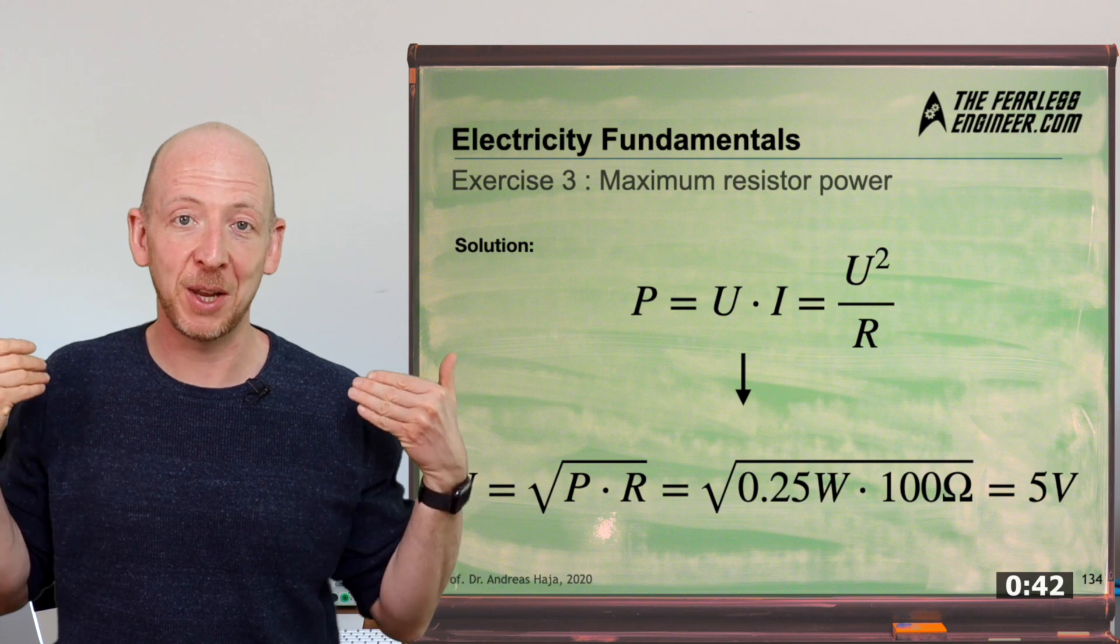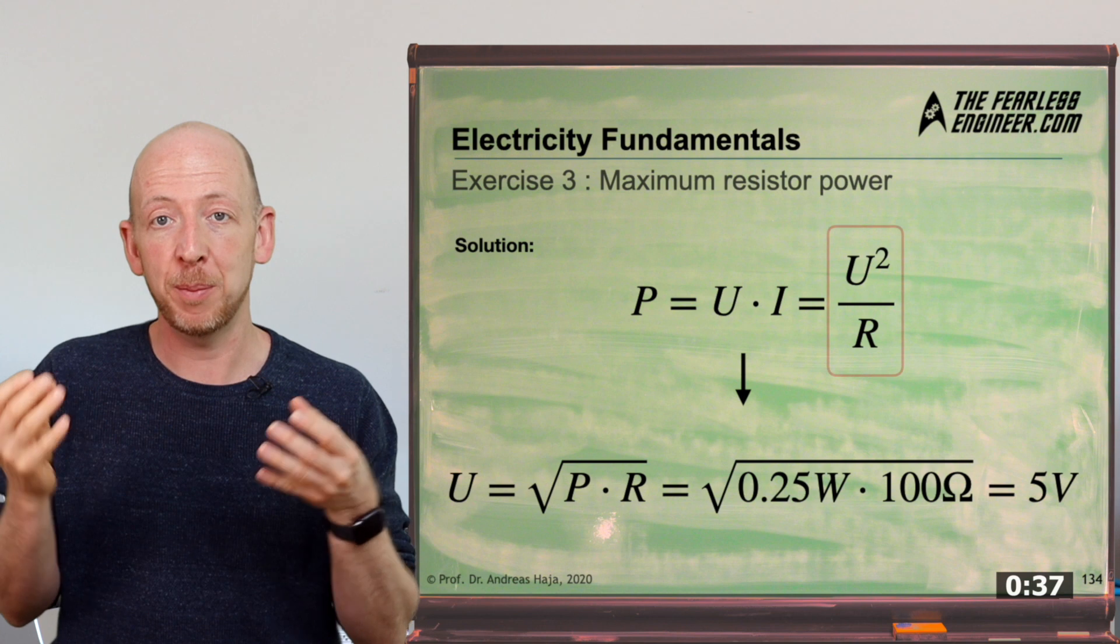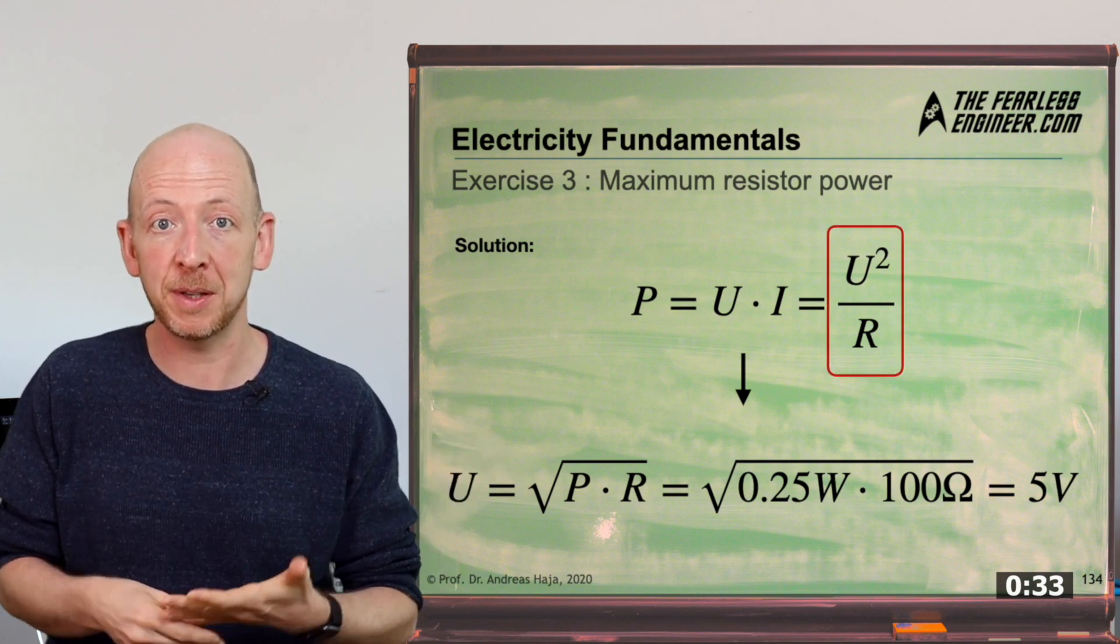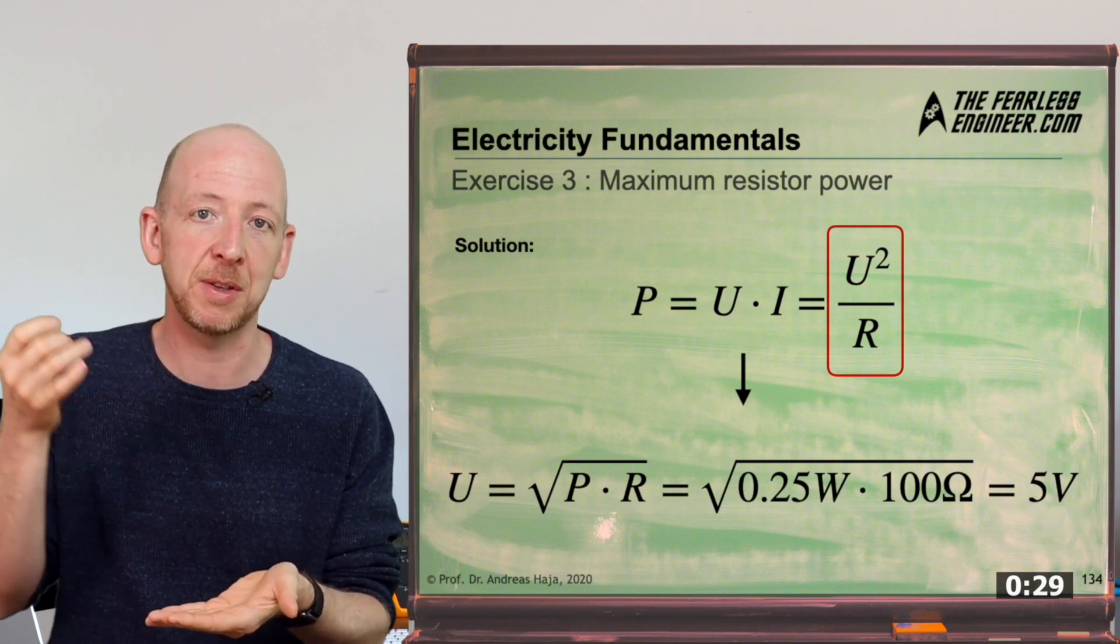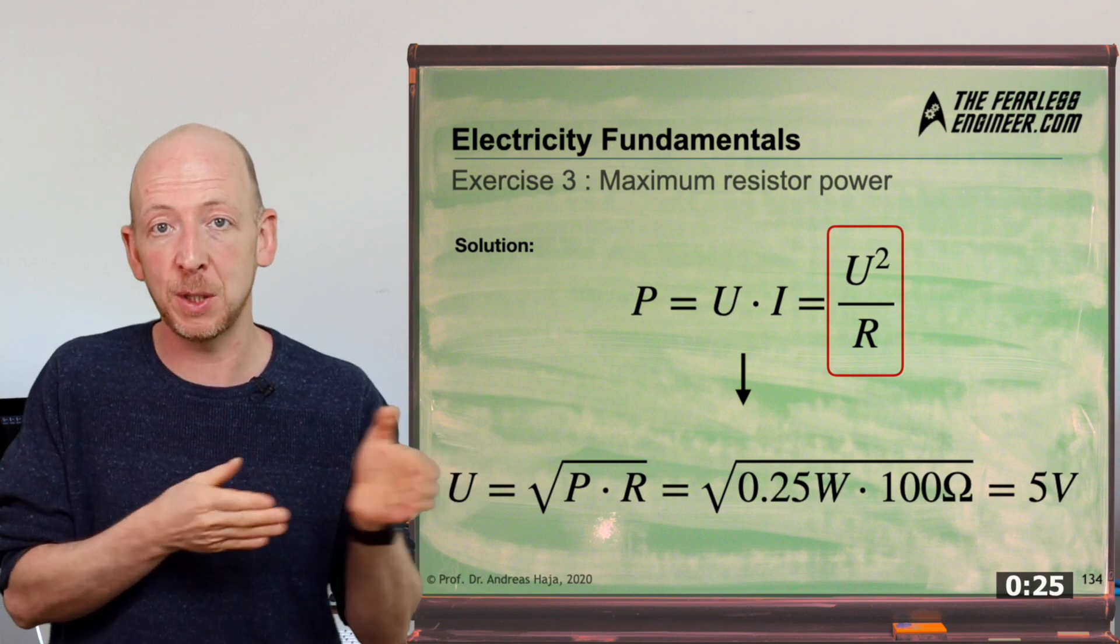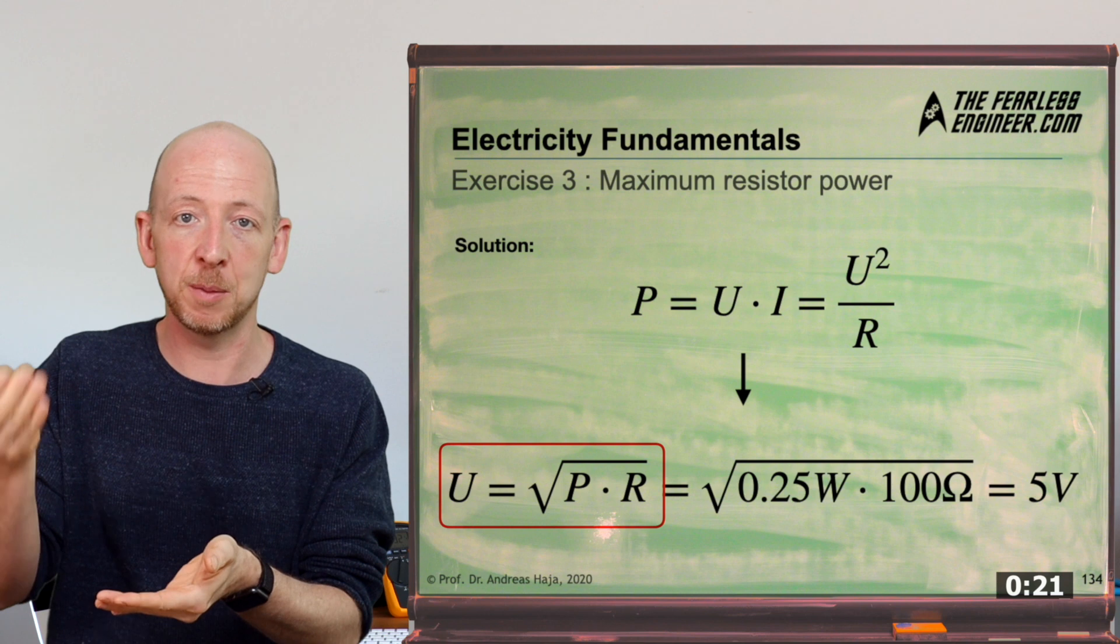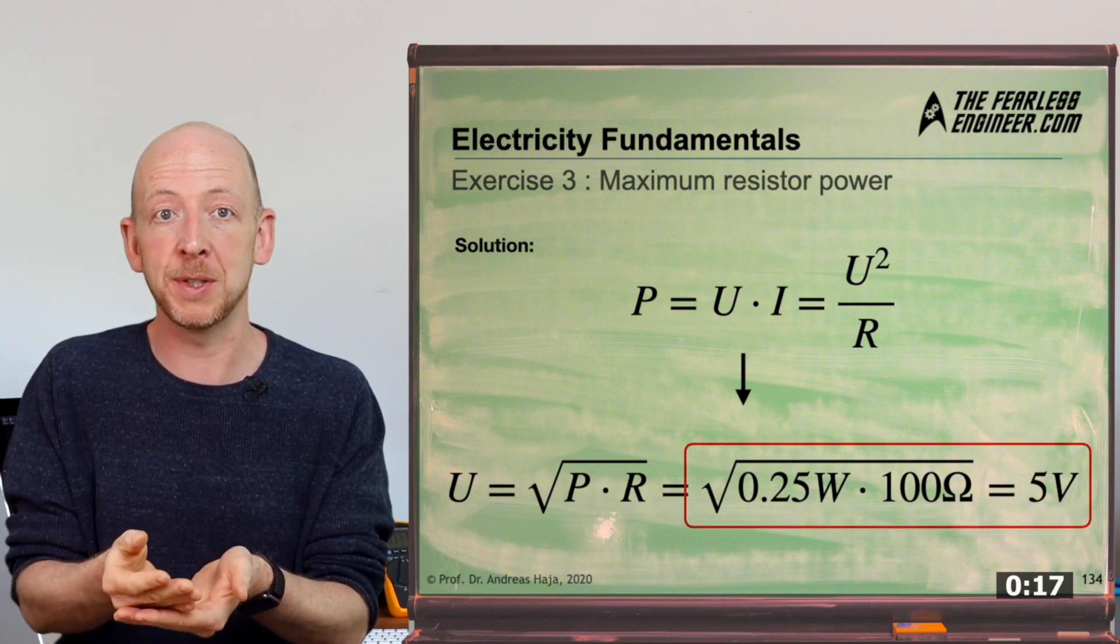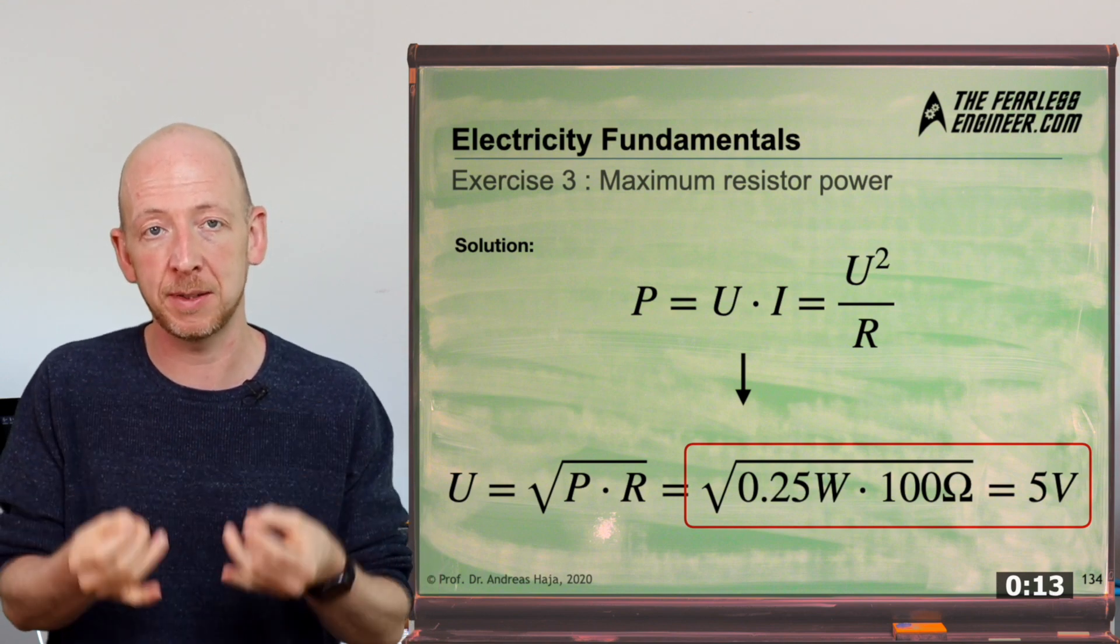Let's take a look at the solution. We can combine the power law and Ohm's law again to get to the form P equals U squared divided by R. We know the resistance value and also the maximum power from the problem definition, which means we have to change the formula according to the voltage, which is voltage equals square root of power times resistance. If we insert the numerical values we'll get a maximum voltage drop of 5 volts which is allowed to drop across the resistor before the power limit is exceeded.